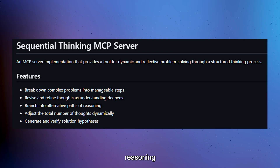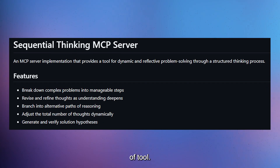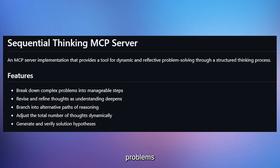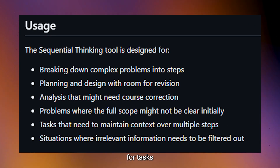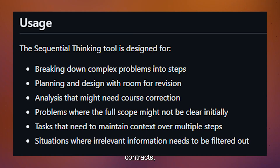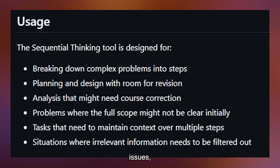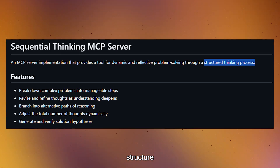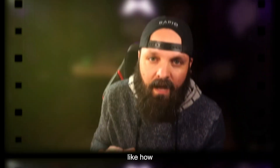Sequential Thinking is more of a reasoning framework than a specific tool integration. It forces AI to work through complex problems step-by-step rather than jumping to conclusions. This is particularly useful for tasks that require systematic analysis — like reviewing contracts, debugging complex issues, or planning multi-step workflows. The key insight is that AI often performs better when you structure its thinking process, much like how you might approach a complex problem yourself.